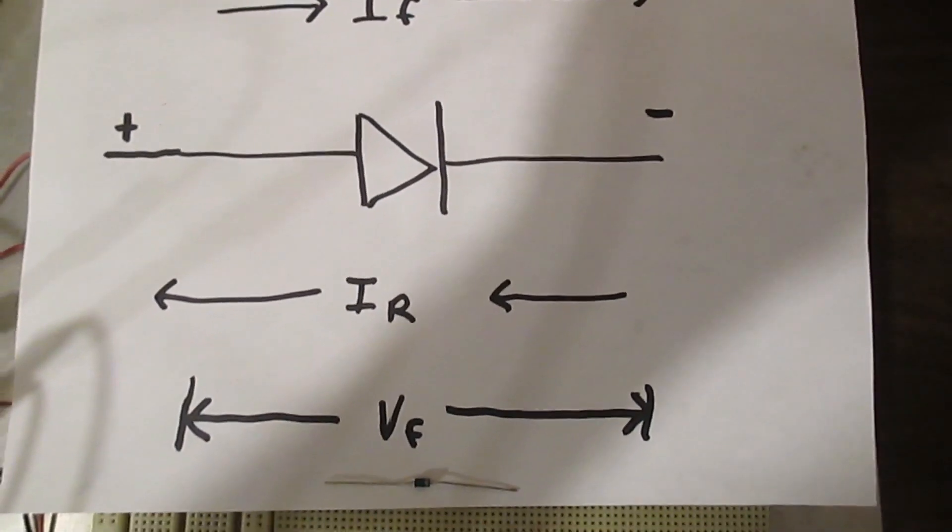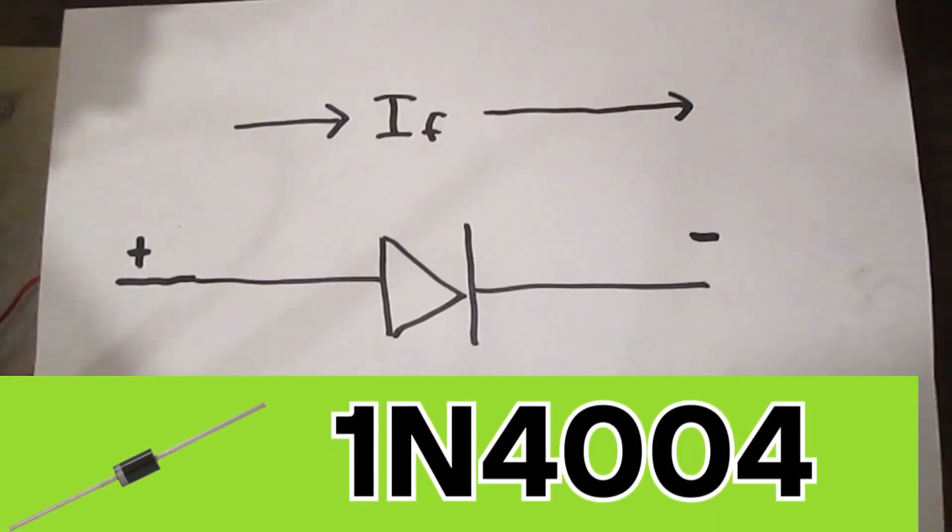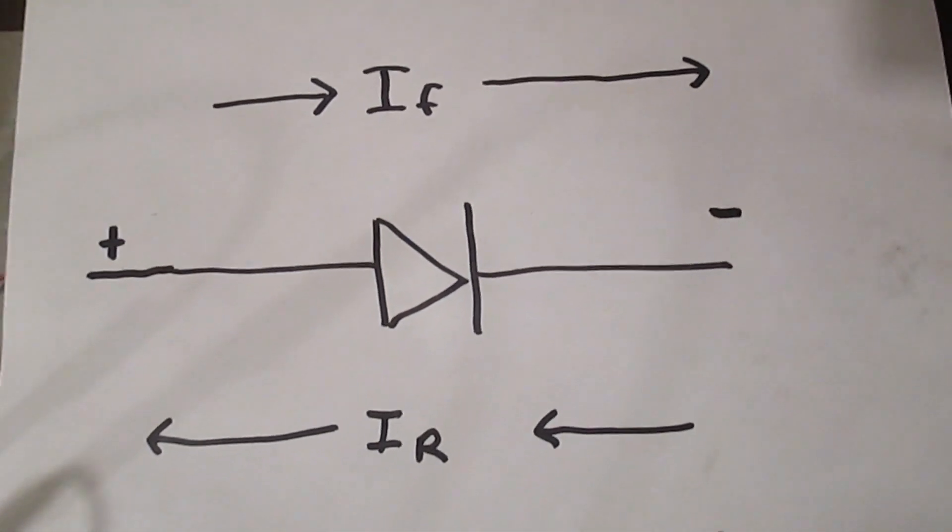The diode we'll be using is a 1N4004. Like every other diode, current flows in one direction for the most part and that's the forward current.